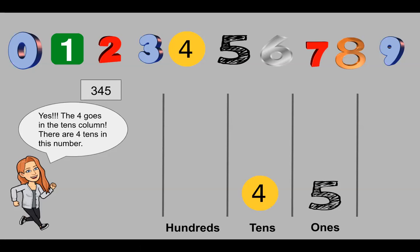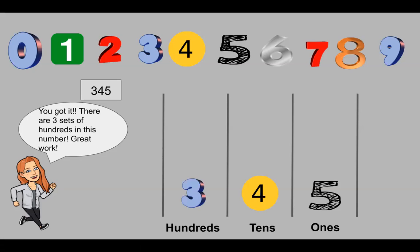You got it — the five goes in the ones column. There are five ones in this number. What number goes in the tens column? The four goes in the tens column. There are four tens in this number. I bet you know what I'm going to ask next — how many hundreds are in this number? There are three sets of hundreds. Great work, guys. We built the number 345, and you can see all of the numbers in their place value columns.